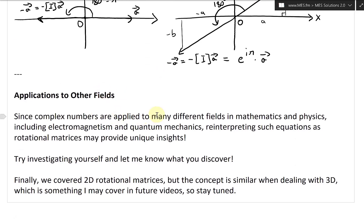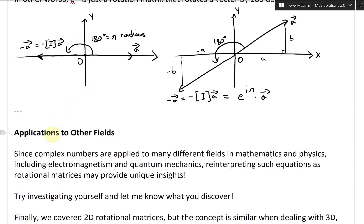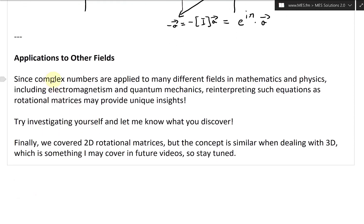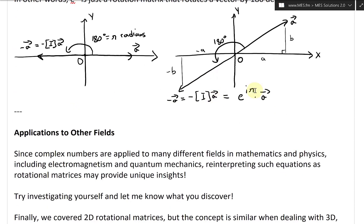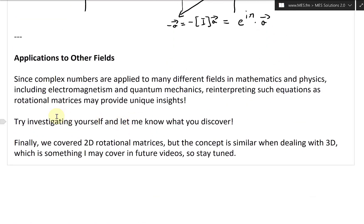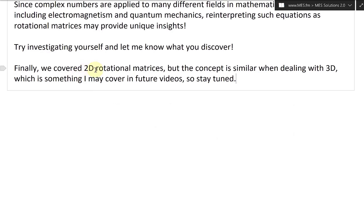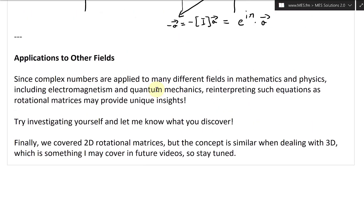Now for application to other fields: since complex numbers are applied to many different fields in mathematics and physics, including electromagnetism and quantum mechanics, reinterpreting such equations as rotational matrices may provide unique insights. Try investigating yourself and let me know what you discover. Finally, we covered 2D rotational matrices, but the concept is similar when dealing with 3D, which I may cover in future videos — so stay tuned.